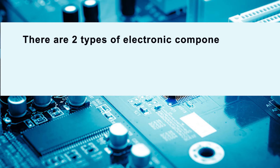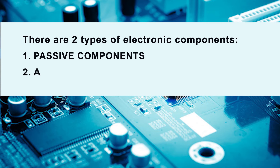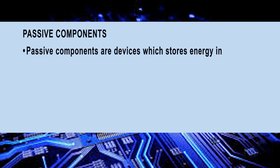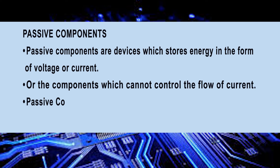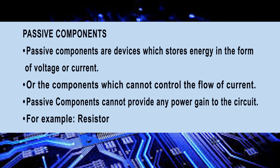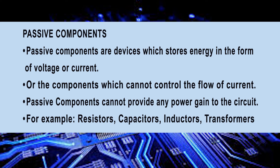There are two types of electronic components: passive components and active components. Passive components are devices which store energy in the form of voltage or current, or components which cannot control the flow of current. Passive components cannot provide any power gain to the circuit. For example: resistors, capacitors, inductors, transformers.